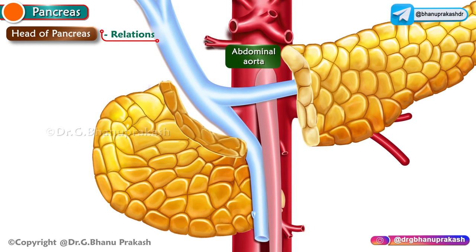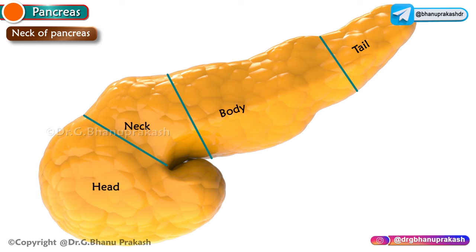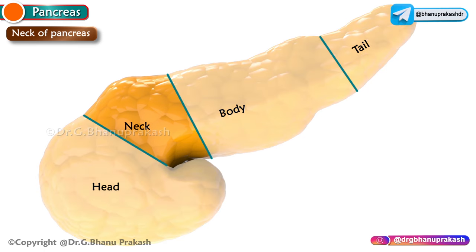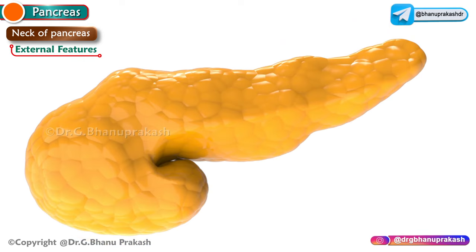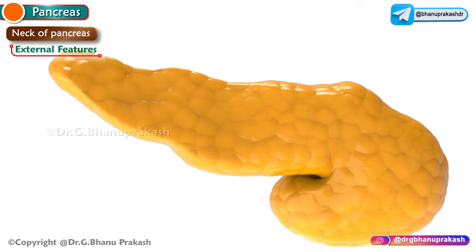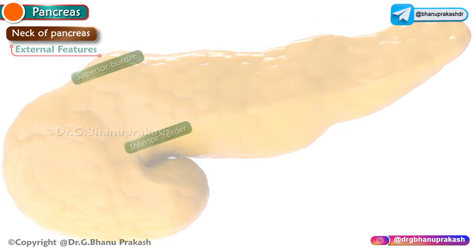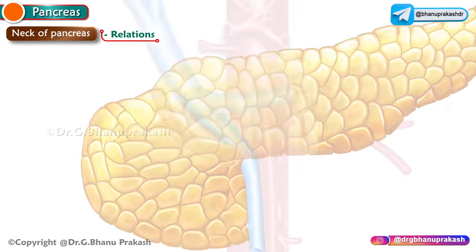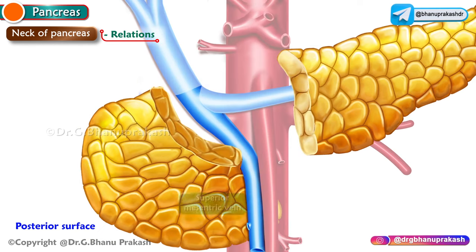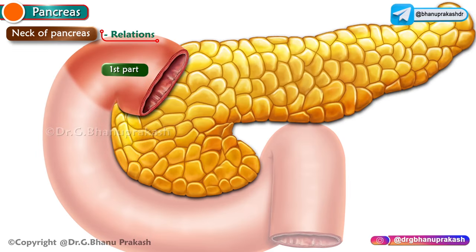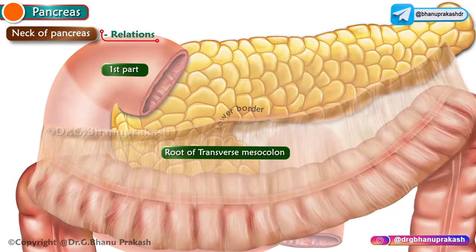The neck is a slightly constricted part of the gland, located between the head and the body. It is 2.5 centimeters long and directed upwards and towards the left. It has two surfaces — anterior and posterior — and two borders — superior and inferior. The anterior surface is related to the pylorus. The posterior surface is related to the termination of the superior mesenteric vein and beginning of the portal vein. The upper border is related to the first part of the duodenum and the lower border to the root of the transverse mesocolon.